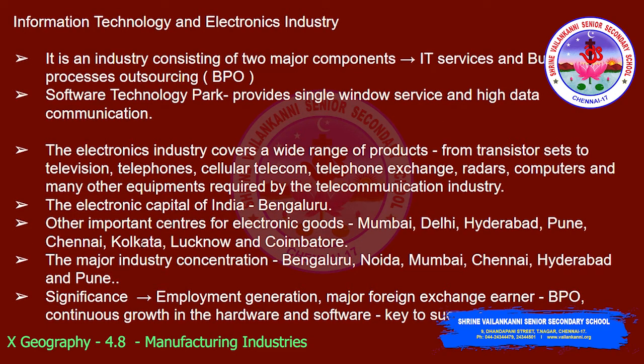Information technology and electronics industry consists of two major components: IT services and BPO, that is business process outsourcing. The software technology part provides a single window service and high data communication facility to software experts. The electronics industry covers a wide range of products from transistor sets to television, telephones, cellular telecom, telephone exchange, radars, computers and many other equipment required by the telecommunication industry.